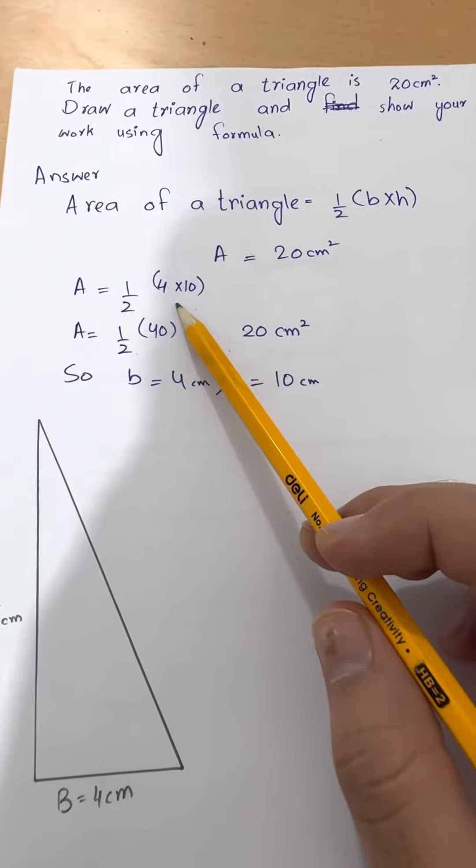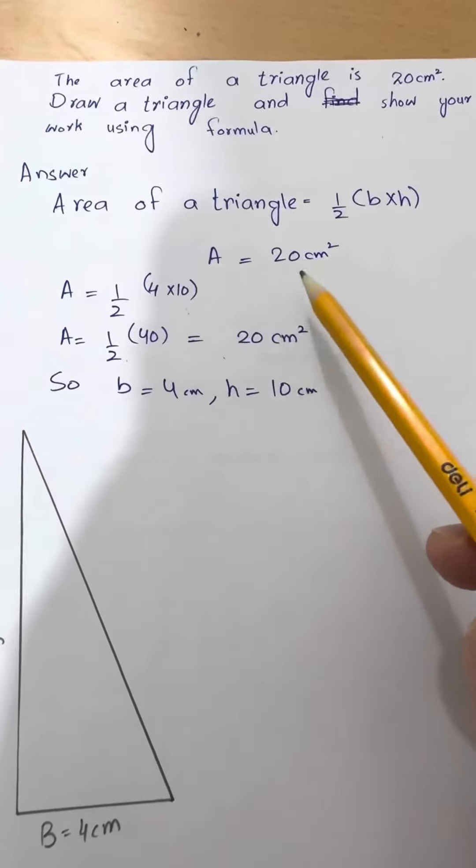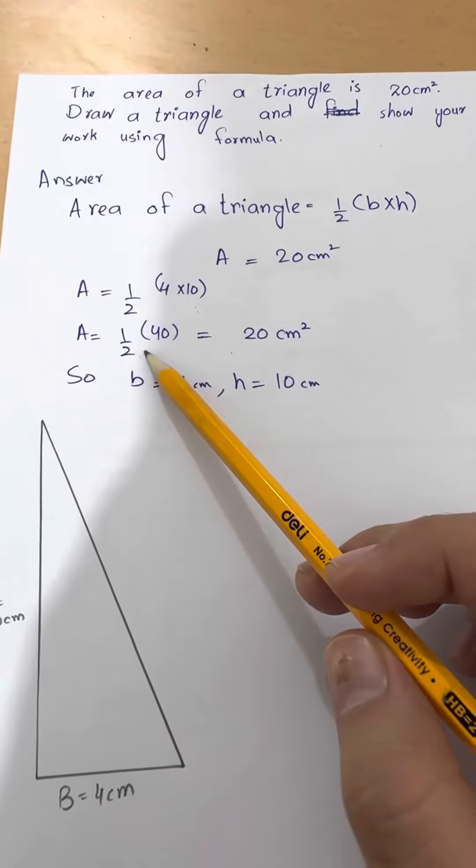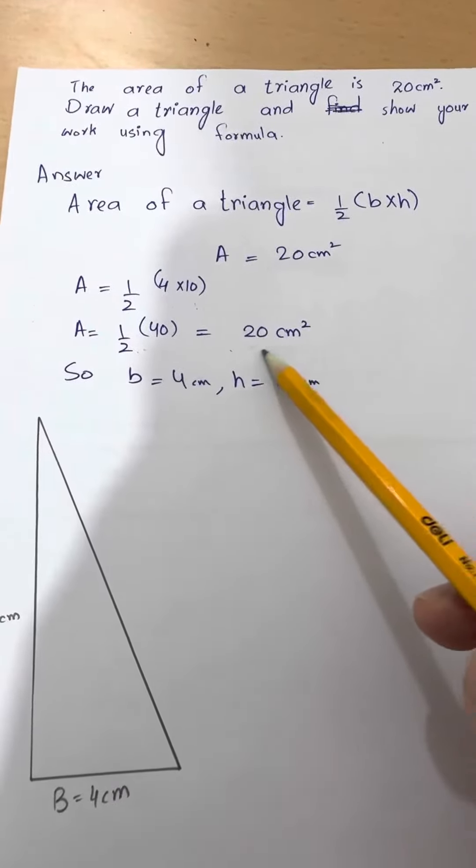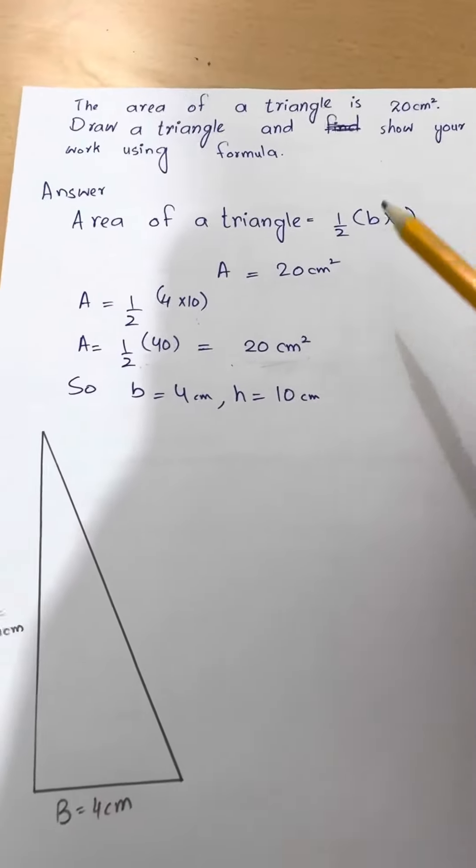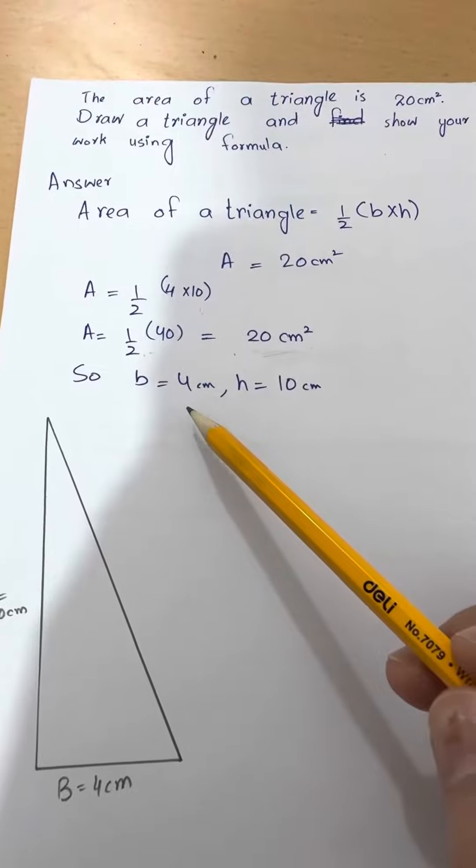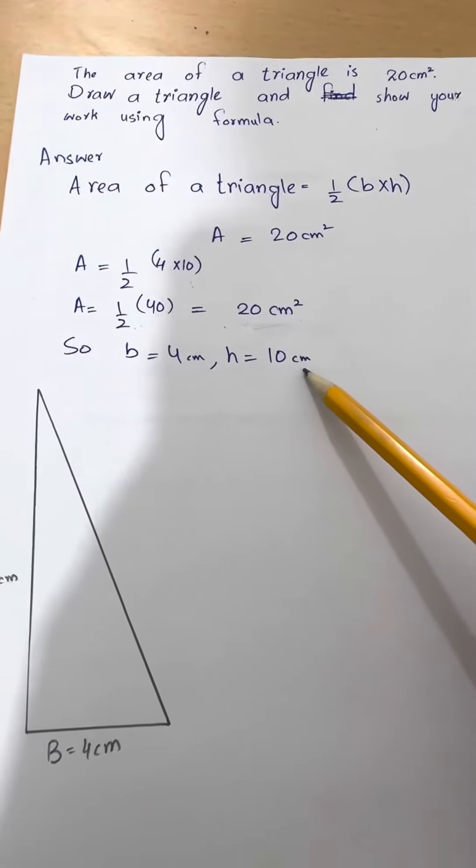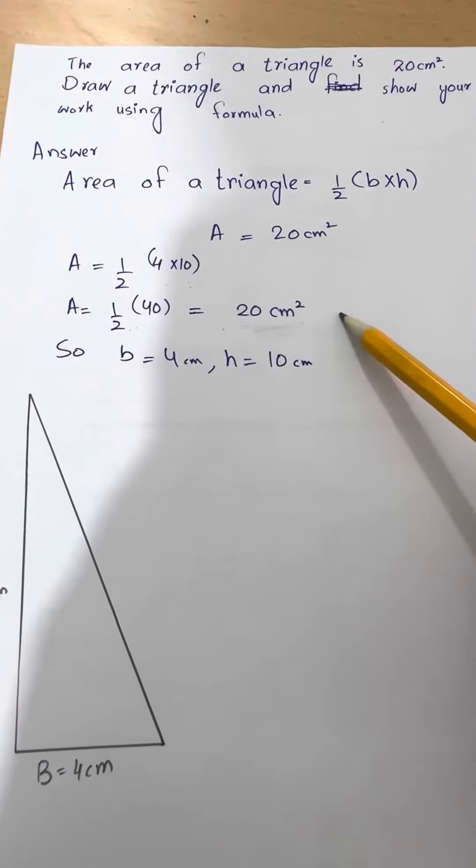You can say base is 10, height is 4 also. It's your choice. When you divide 40 by 2, you get 20, the same that is required in the question. So, base here in this example is 4 and height is 10 centimeter. We are done with this part.